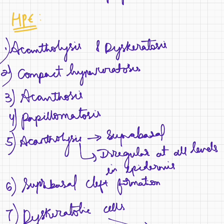Coming to histopathological examination. In this dyskeratosis follicularis lesion, there is dyskeratosis and since there is loss of desmosomes, there is going to be acantholysis. There is compact hyperkeratosis, acanthosis, papillomatosis, and acantholysis which is suprabasal, involving the cell layers above the stratum basale. This acantholysis is irregular and can be seen at all levels in the epidermis, and there is suprabasal cleft formation.